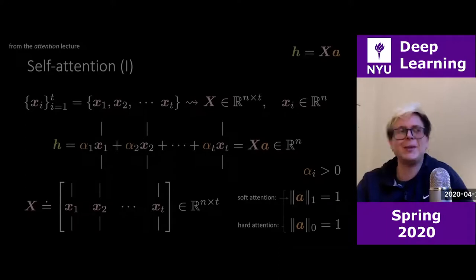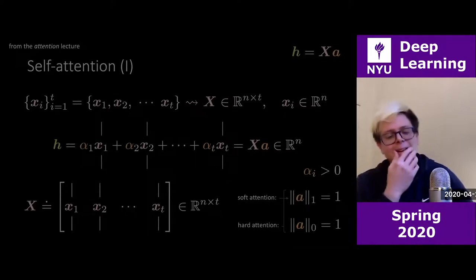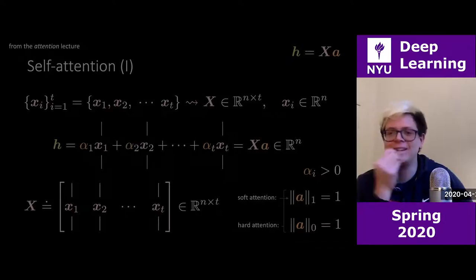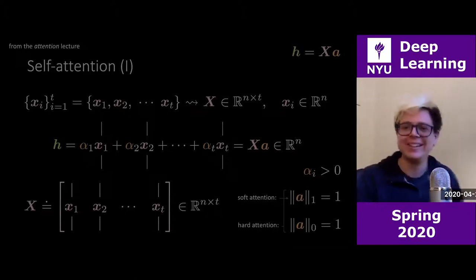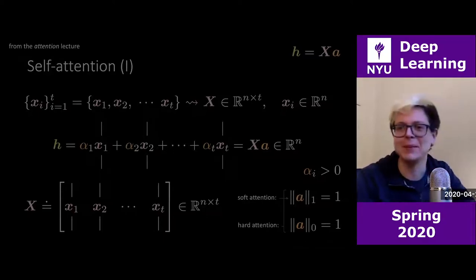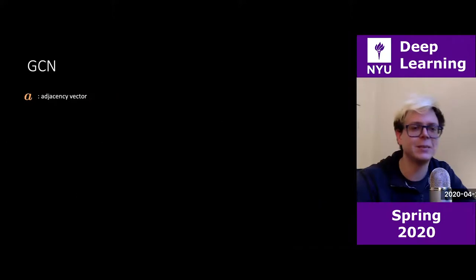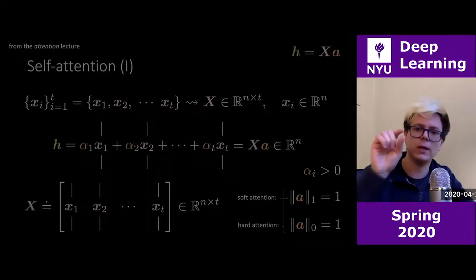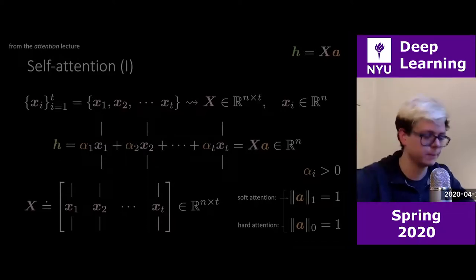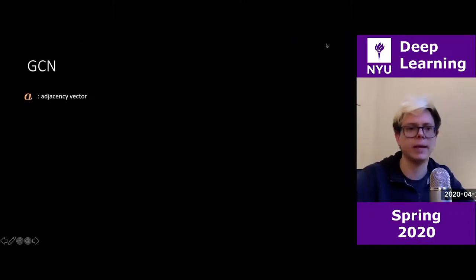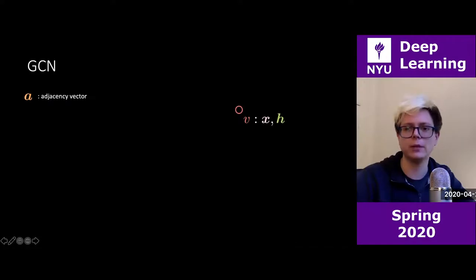I was reading the literature about graph convolutional networks and realized it's actually the same thing. Let's get there from this perspective. For GCNs, my vector a — containing all the coefficients weighting these columns — I'm going to call this my adjacency vector.